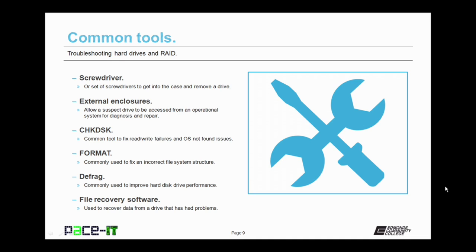Then there's the format utility. It's commonly used to fix an incorrect file system structure. Then there's also defrag, which is used for defragmentation of a hard drive to improve the performance of a hard disk or RAID array.